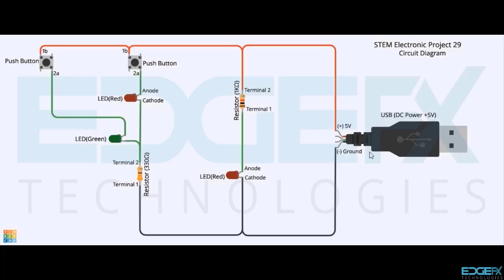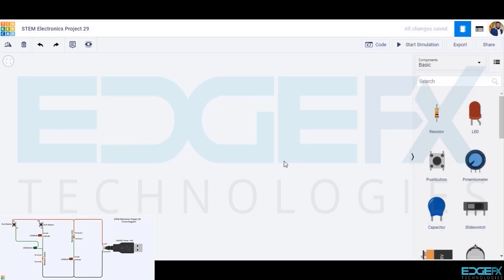Hi, in this circuit we use components like push buttons and red and green LEDs in place of a dual LED due to non-availability of the component in Tinkercad, along with the power indicator circuit we built earlier. Let's build this circuit in Tinkercad and simulate it.